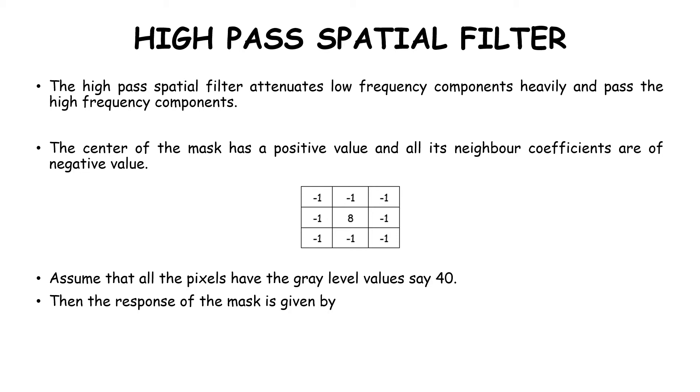Let us assume that all pixels have gray values of 40. Then the response of the mask is given by r = (1/9)(w1·z1 + w2·z2 + ... + w9·z9).